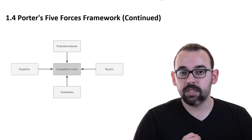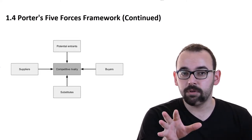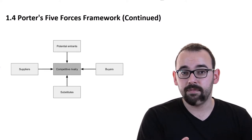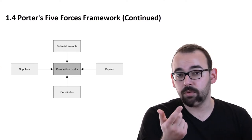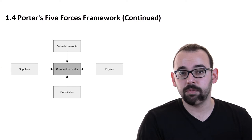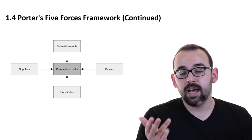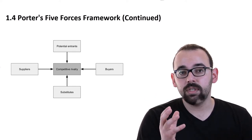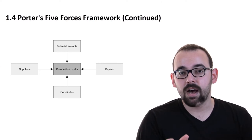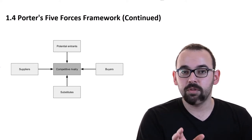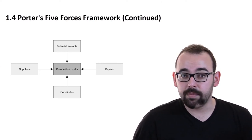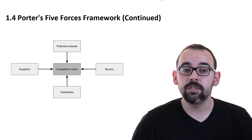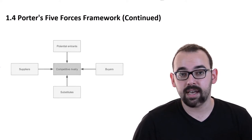In the previous video we talked about five forces: threat of entry, power of buyers, power of suppliers, substitutes, and competitive rivalry. All five of these are going to define what an industry is about and whether it might be good for us to enter it. So let's look at market types.